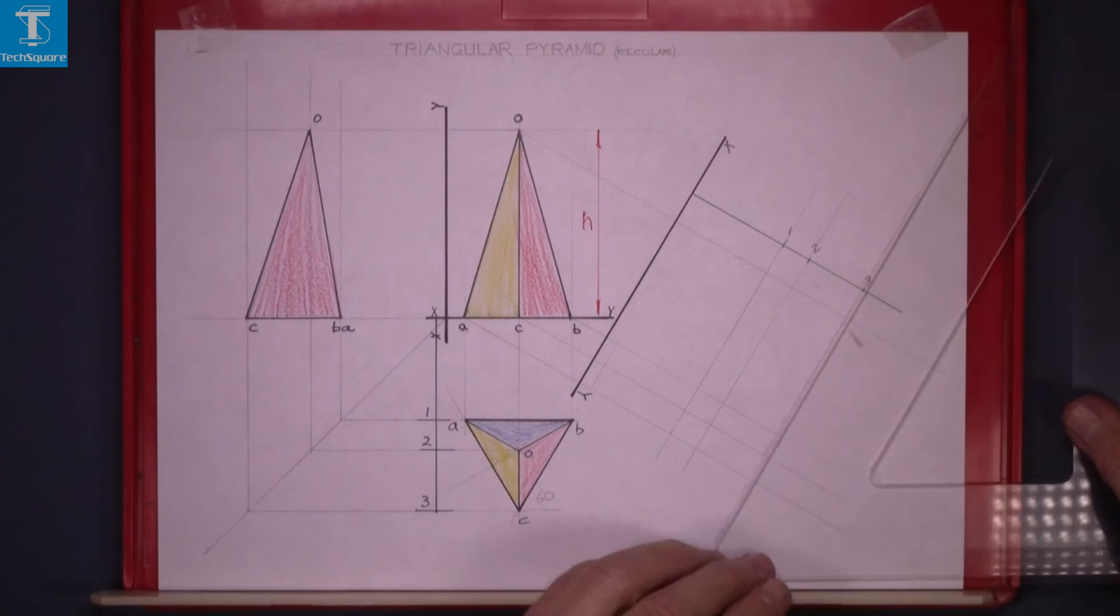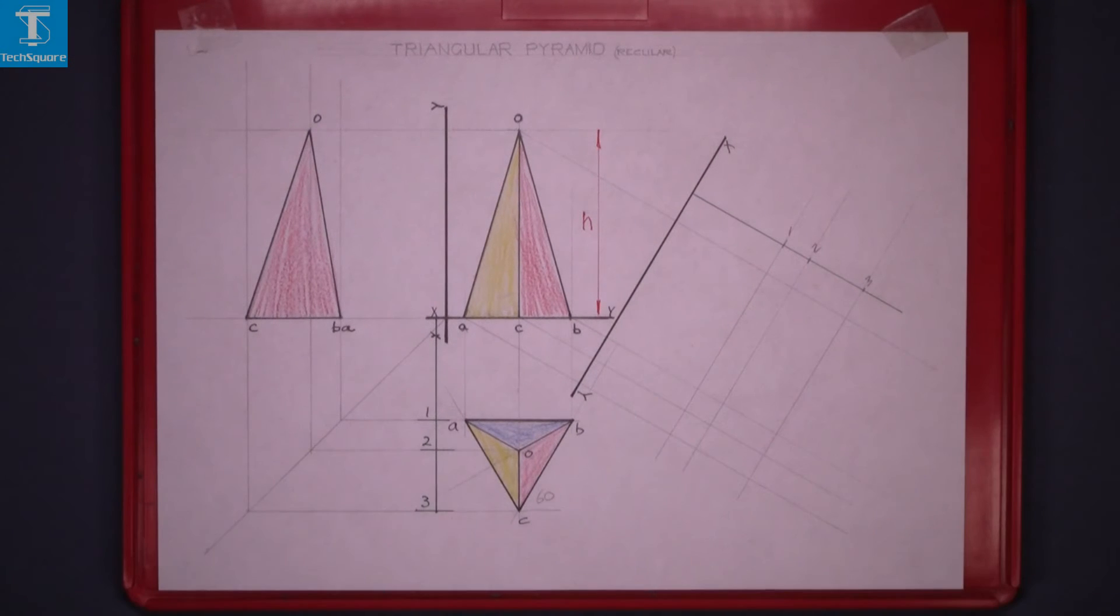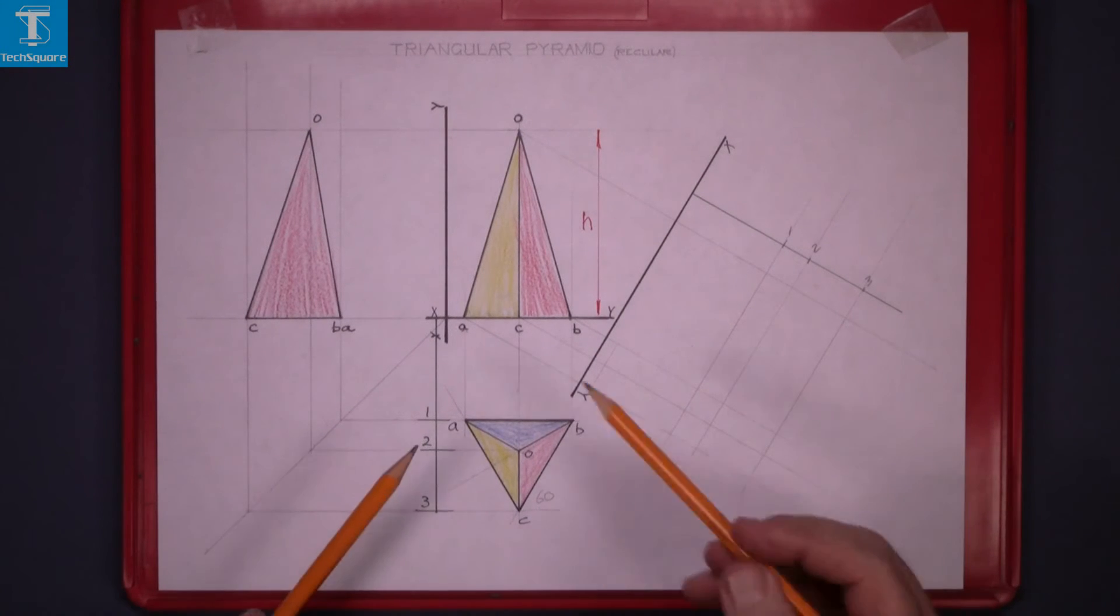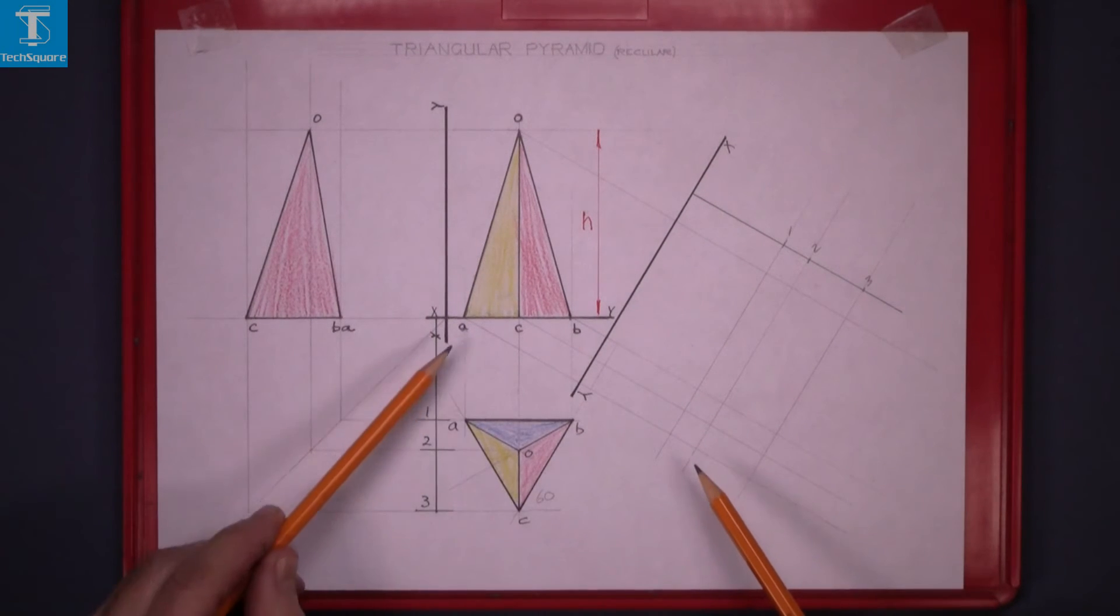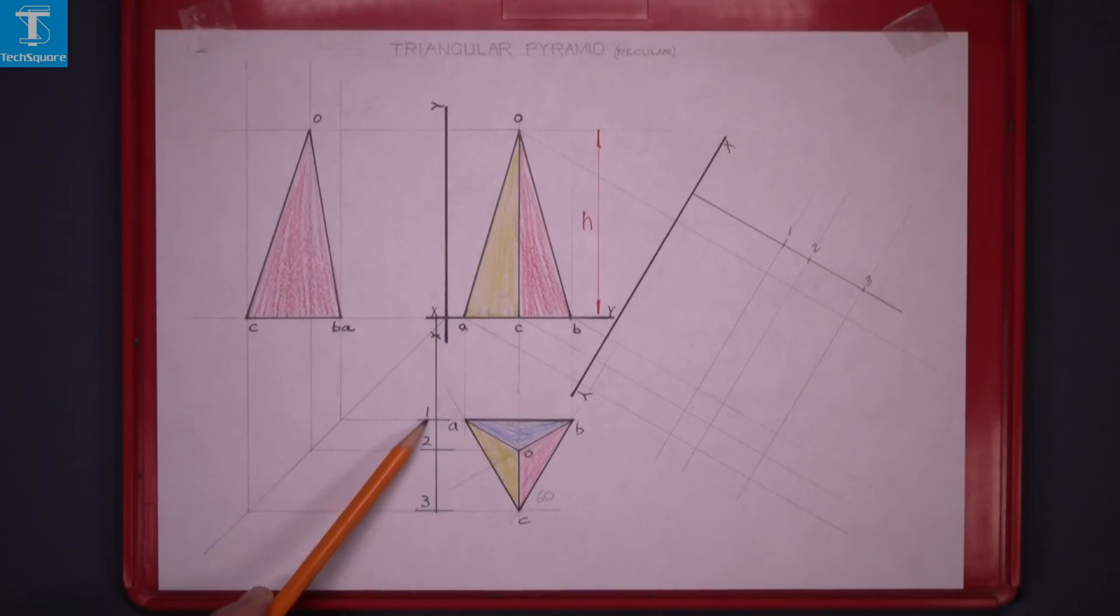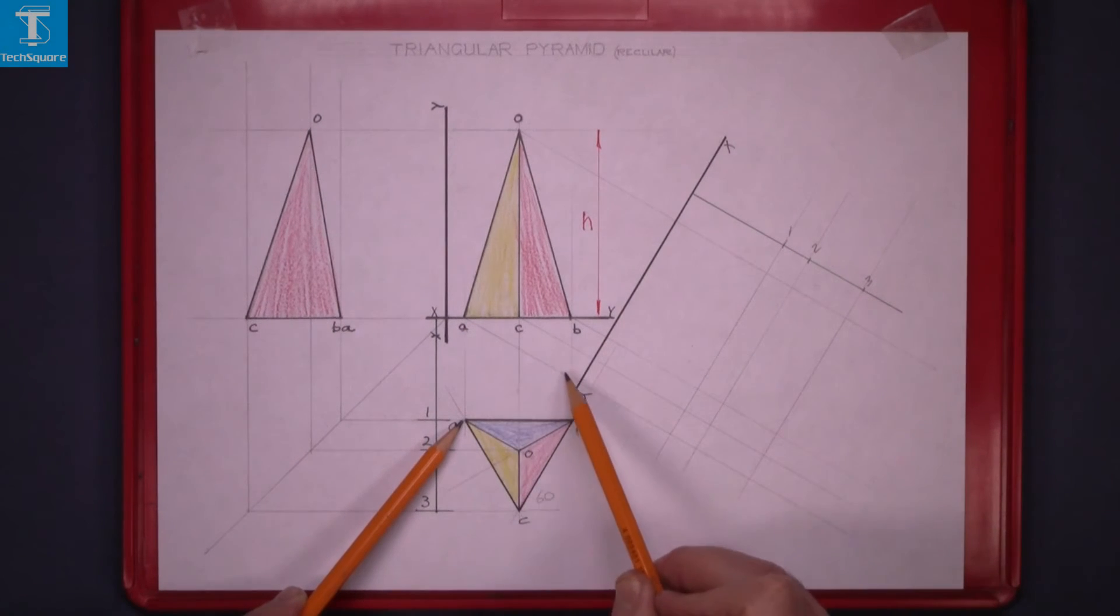And now to trace the points. Point A is here on that line, and on plan it's on distance 1. So follow A down to line 1. That's A.